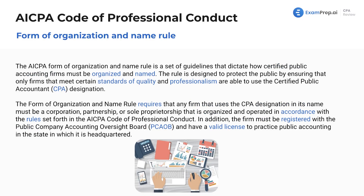Form of organization and name rule — these are the different rules within the AICPA. The form of organization and name rule is a set of guidelines that dictate how certified public accounting firms must be organized and named.